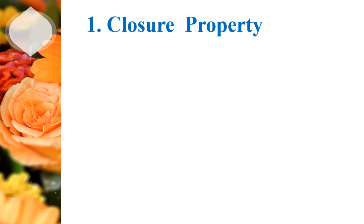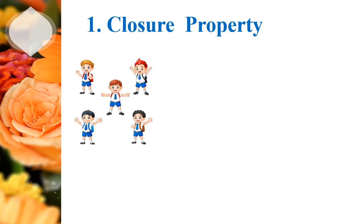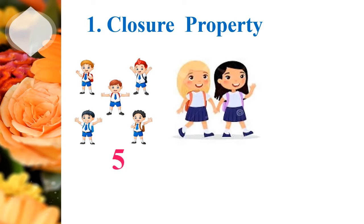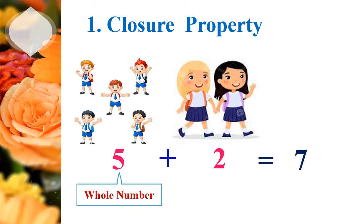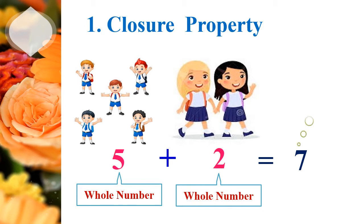First, let us see closure property. Let us understand with one example. Here, how many boys are there? 5 boys. And how many girls are there? 2 girls. So let us find the total number of children. We have to add the number of boys and number of girls, so we get 7. Here, 5 and 2 are two whole numbers, and the result is also a whole number.